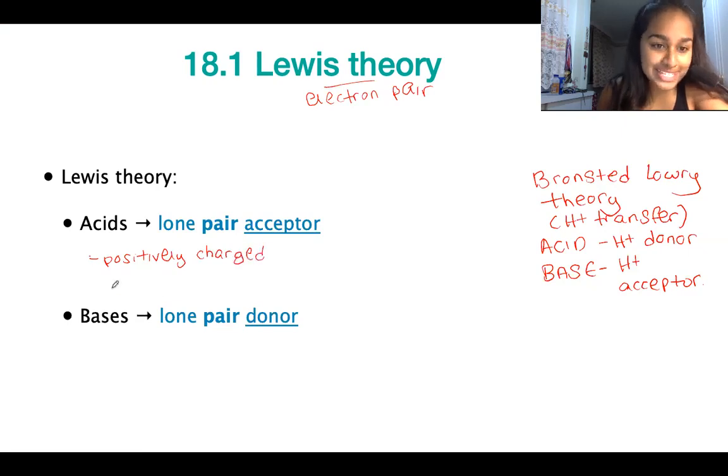And they also need to have an empty orbital that can accept the incoming lone pair of electrons. Bases, on the other hand, since they have a lone pair to donate, they are going to be negatively charged, as they have the lone pair.